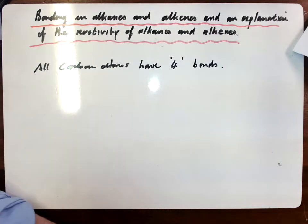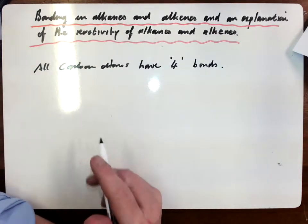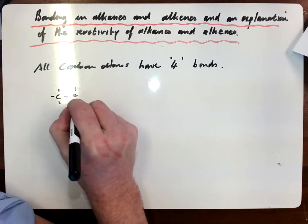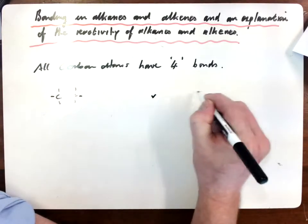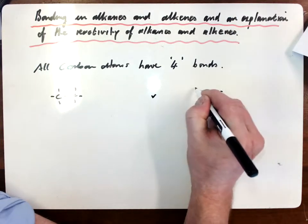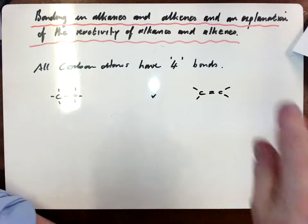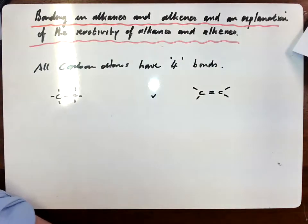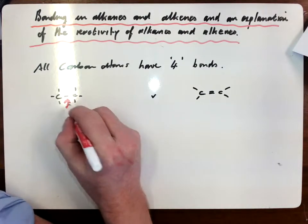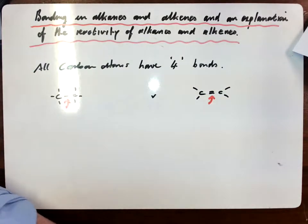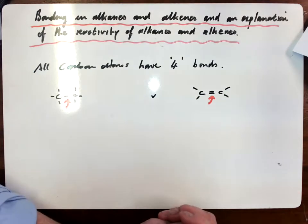So if we look at the bond formation first of all in ethane and we're going to compare that to the bond formation in ethene. Now primarily we're going to talk about the bonds between the carbons and how they form, and then use that as an explanation for the differences in reactivities between the two.